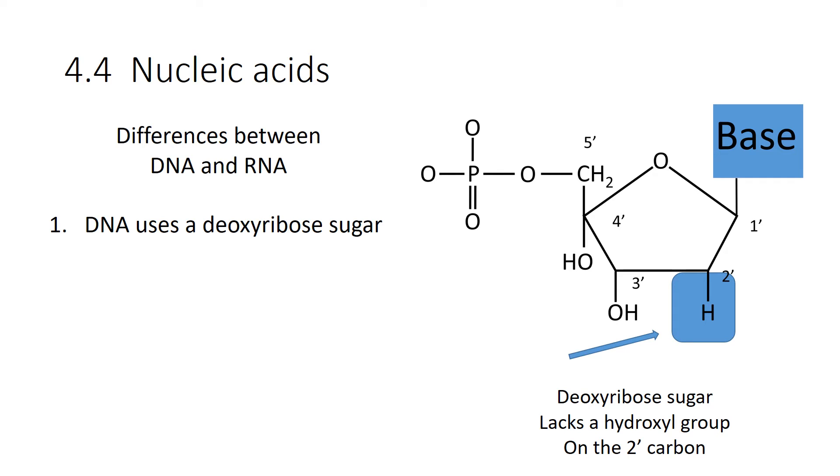DNA uses a deoxyribose sugar. Now, I've highlighted with the arrow on that 2 prime carbon, there is just a hydrogen. It is missing the oxygen. So it lacks a hydroxyl group on that 2 prime carbon. That's actually very important for the structure and functioning of DNA. First of all, it makes it very stable. And that's a good thing. You want your molecule to be stable if you're going to be storing information in it.